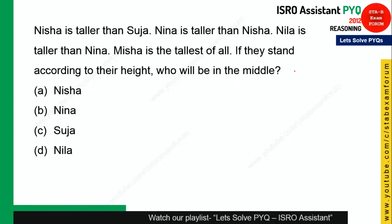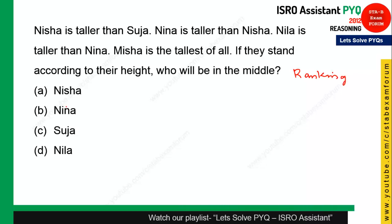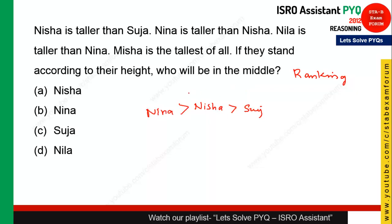This question is from order and ranking. Nisha is taller than Sujata. Nina is taller than Nisha. Misha is the tallest of all. So the order from tallest is: Misha, Nina, Nisha, Sujata. The person in the middle position is Nina, so option B is the right answer.